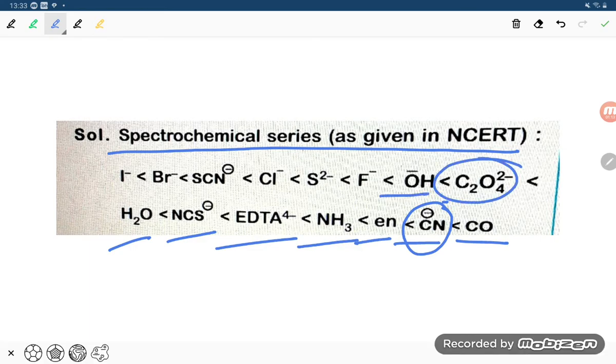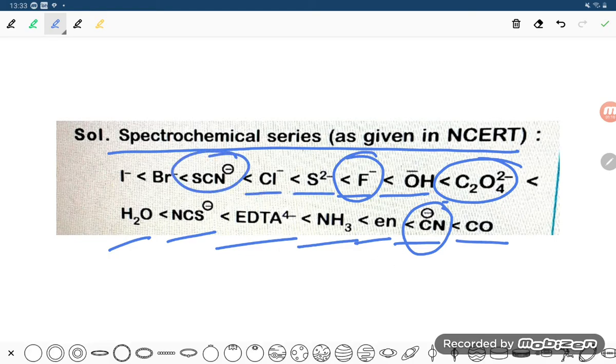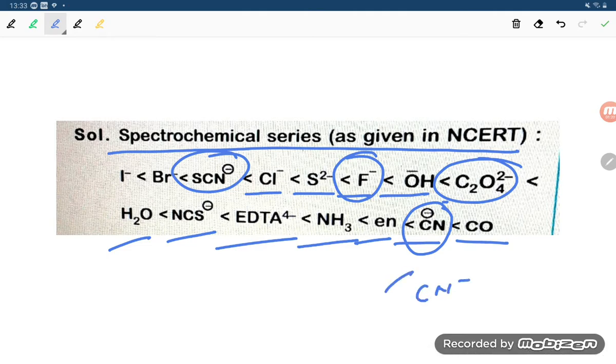Then OH⁻, F⁻ is there third, and SCN⁻ and SCN⁻ last one. So this is our order. If you want to see the order, that is CN⁻, then C₂O₄²⁻, and then SCN⁻.